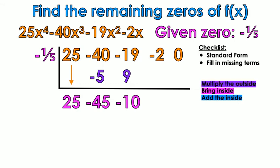Multiply the outside. Bring it inside. Negative 1 fifth times negative 10 is 2. Add the negative 2 and the positive 2. Zero. Now think to yourself. My original problem was an x to the 4th power. A degree 4. So what's my answer going to be? X to the 3rd. Good.